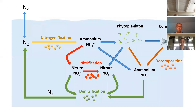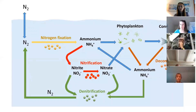Nitrogen gas is inert and it's a natural part of the nitrogen cycle. If you have all the components of the nitrogen web — the microbes, the bacteria, the archaea, the phytoplankton, the fish, the plants, the animals — nitrogen can stay in balance in that system.